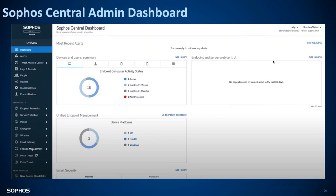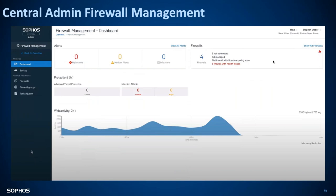From the customer's dashboard you'll see all your endpoints, servers, mobile, encryption, and other components, along with firewall management. Every single customer will have firewall management available. Once you click into firewall management, if you don't have any firewalls yet, it'll show a wall of text with an add button. If you have existing firewalls, you'll see alerts for those firewalls bubbled up into Sophos Central. I currently have four firewalls joined into my central management — one not connected, and one with health issues. You'll also see a consolidation of advanced threats, IPS attacks, web activity, and average usage across the network, even across multiple firewalls.